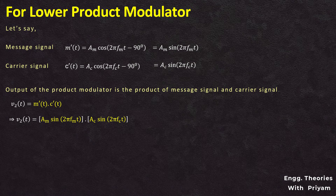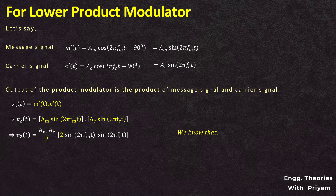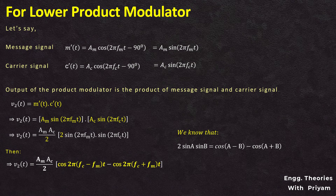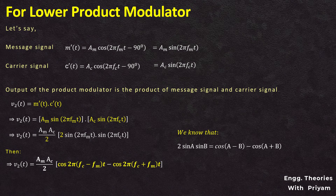Rearranging: V2(t) = AM·AC·sin(2π·fM·t)·sin(2π·fC·t). Dividing and multiplying by 2 and applying the formula 2·sinA·sinB = cos(A−B) − cos(A+B), V2(t) becomes: V2(t) = (AM·AC/2)·cos(2π(fC−fM)t) − (AM·AC/2)·cos(2π(fC+fM)t). This V2(t) is the output of the lower product modulator and is also given as input to the summer block.